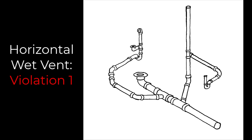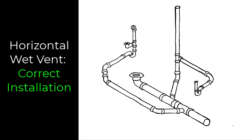Horizontal wet vent violation one: we have a wet vented bathroom group with a tub, a toilet, and a lavatory. The wet vent extends from the lavatory downstream. The problem is the tub is connected upstream. The toilet can connect upstream because that is its individual connection to the wet vent, but the tub should not connect to the toilet arm — it should connect downstream from the lavatory so that it has an individual connection to the wet vent, even if that means running a little farther with its trap arm.